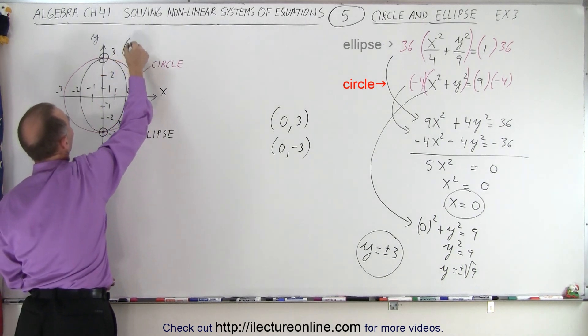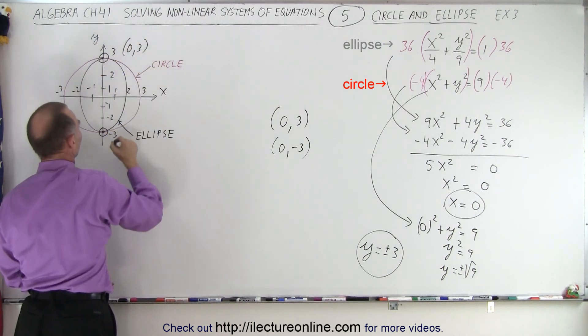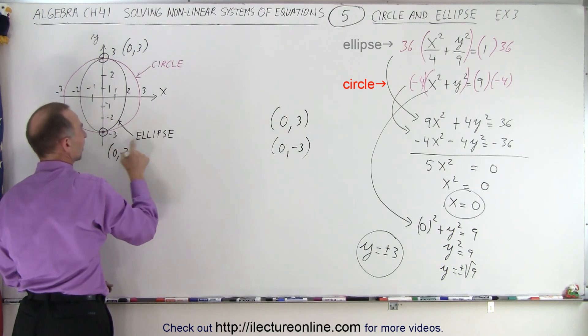So over here, this is the pair (0, 3), and this is the pair (0, negative 3), the two solutions.